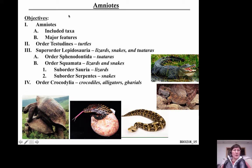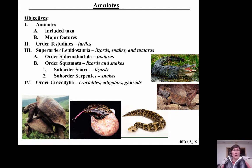What we're going to talk about today are the amniotes, the turtles, and the order Testudines. We're going to talk about the superorder Lepidosauria, which includes the lizards, the snakes, and the tuataras. The order Sphenodontida includes the tuataras. We'll talk about the order Squamata, which includes lizards and snakes together, the suborder Sauria — the lizards — and the suborder Serpentes, which are the snakes. Then we'll finish with the order Crocodilia — crocodiles, alligators, and gavials — and we'll also discuss the Archosauria. First, let's talk about amniotes.